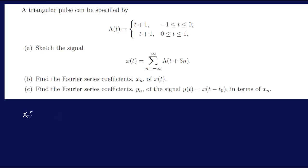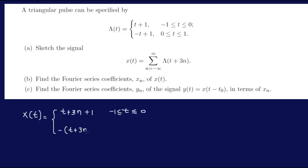So x(t) is equal to λ(t). We have t plus 3n here, so all we need to do to get t plus 3n is replace wherever we see t with t plus 3n. So we have t plus 3n plus 1 for t between minus 1 and 0, and minus t plus 3n plus 1 for t between 0 and 1.